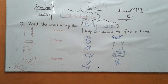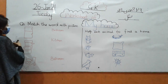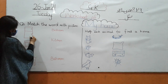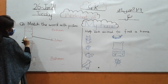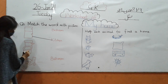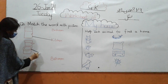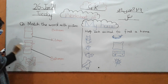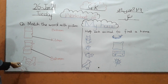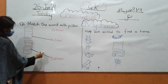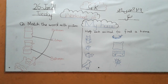What is this? This is a fridge. Fridge is in the kitchen, so you have to match fridge with the kitchen. What is this? This is a cupboard. Cupboard is in the bathroom, so you have to match cupboard with the bathroom. What is this? This is a bed. Bed is in the bedroom, so you have to match bed with the bedroom.